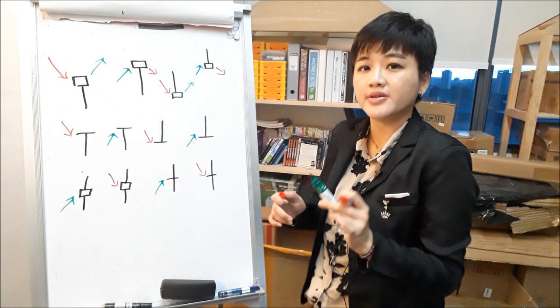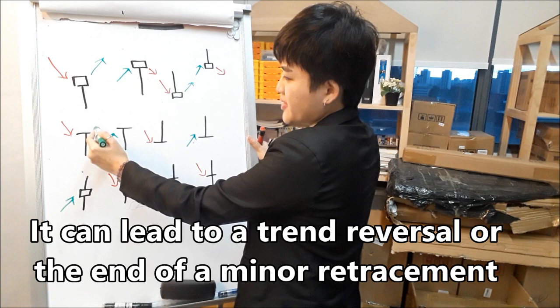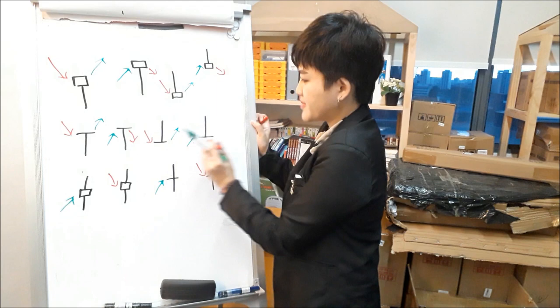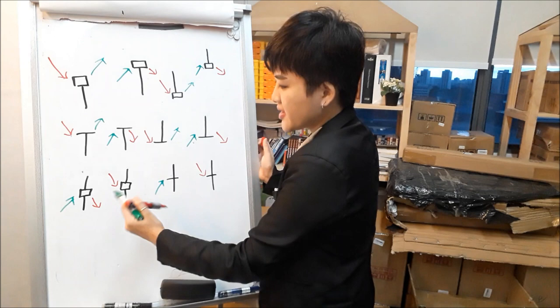Now by U-turn, what I'm talking about is the whole entire trend can reverse, or the retracement might end. So you see this pattern at the end of a downtrend, price is going to go up. And this pattern at the end of an uptrend, price might go down afterwards. And this pattern at the end of a downtrend, it might U-turn, and this pattern might U-turn downwards if it shows up at the end of an uptrend — it's going to go down. At the end of a downtrend, it tells you that price is going to go up.